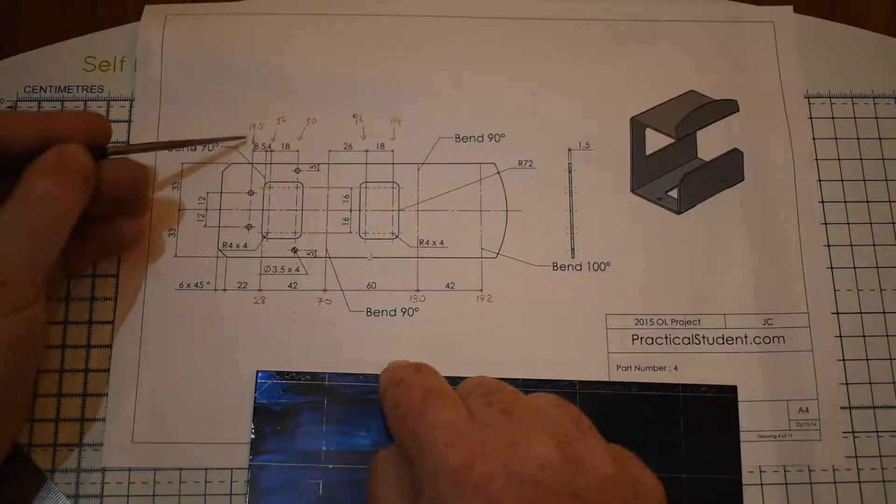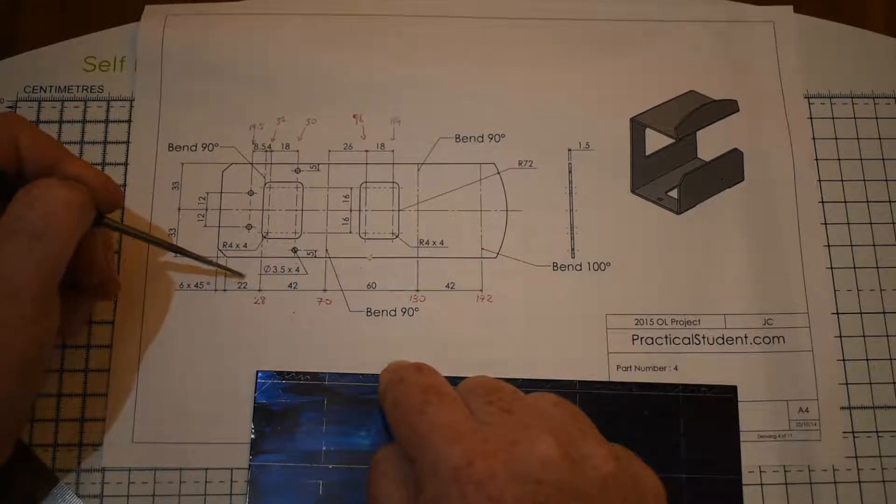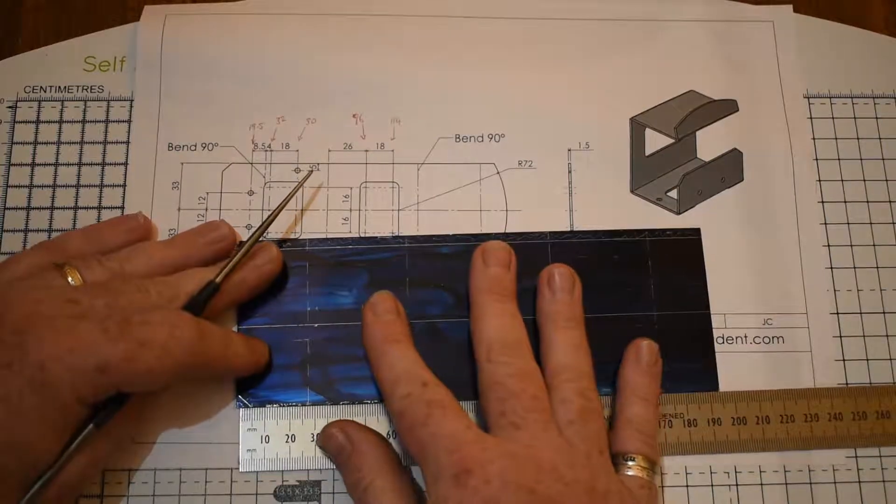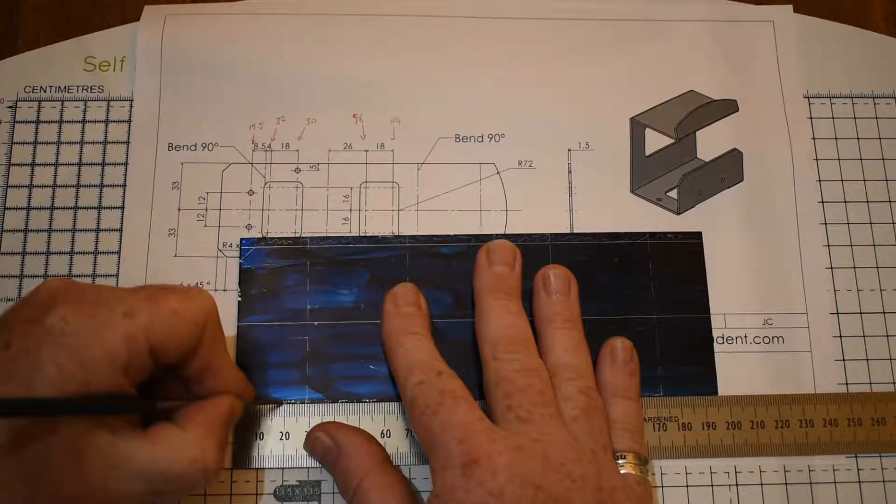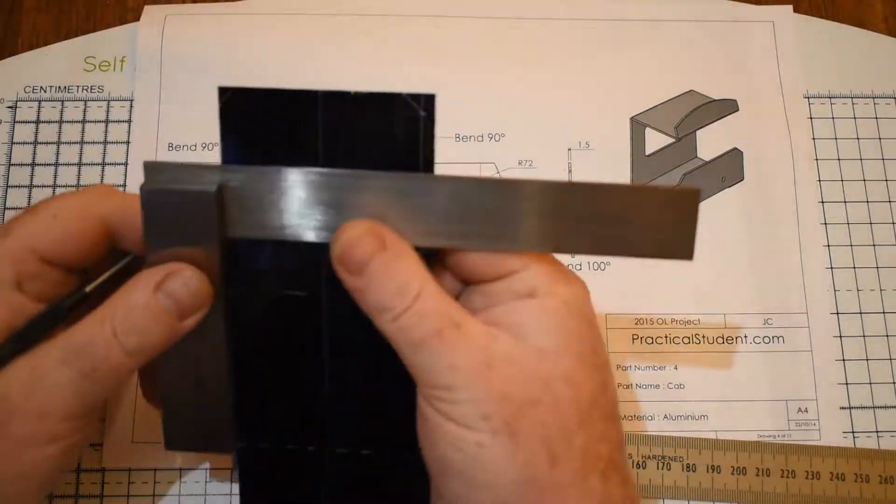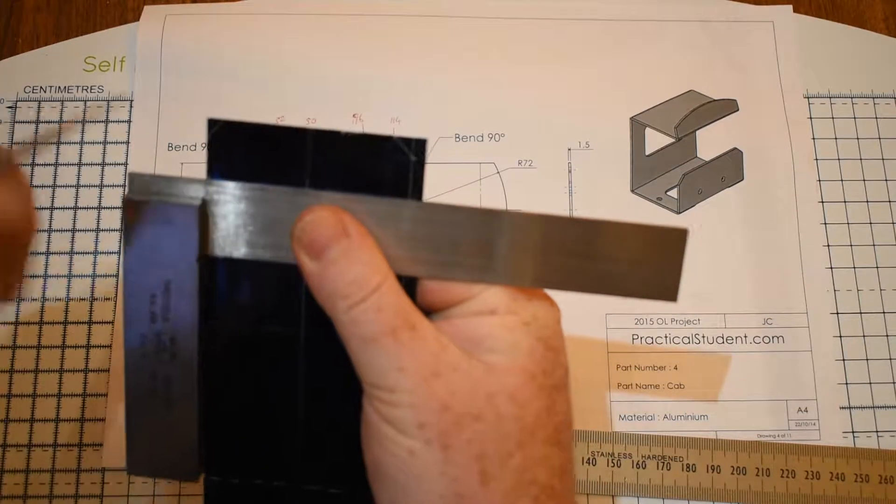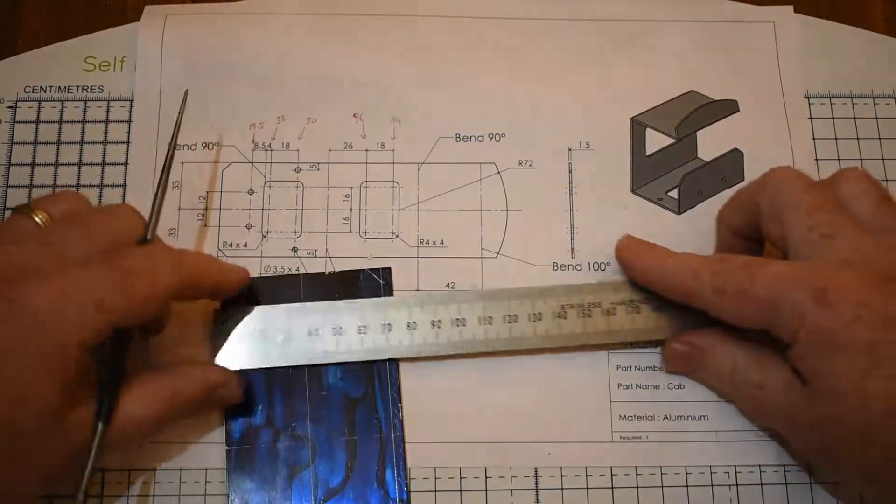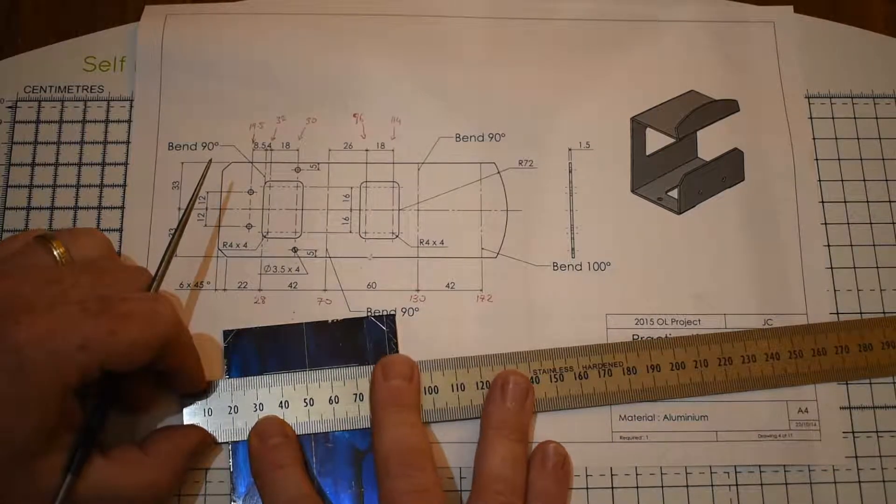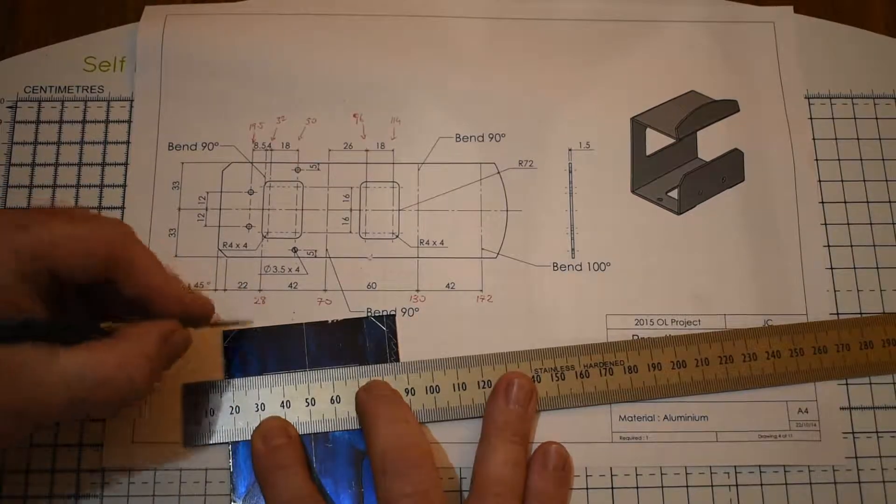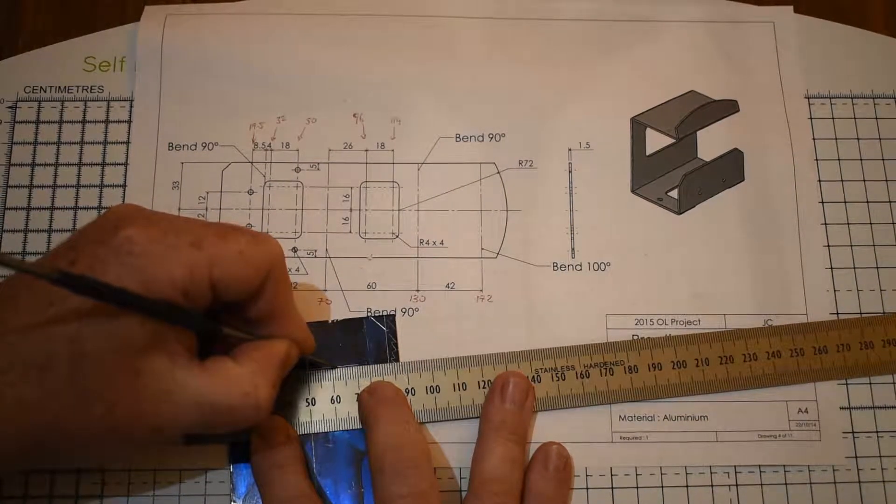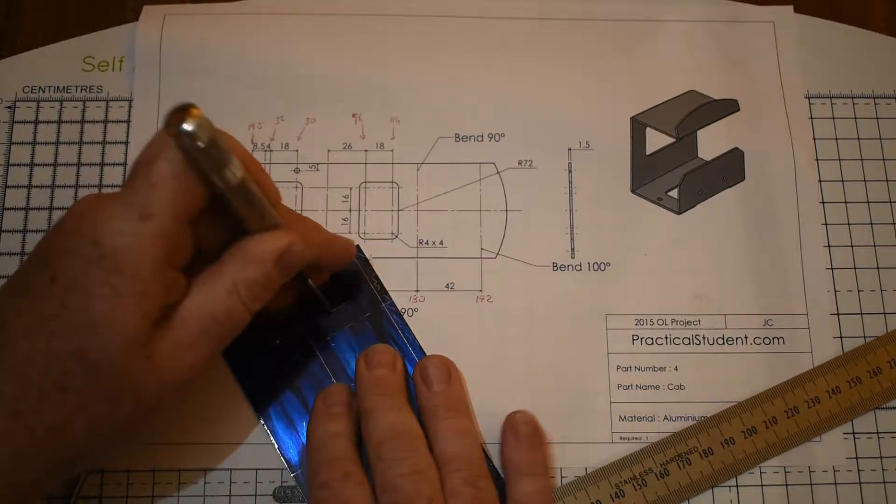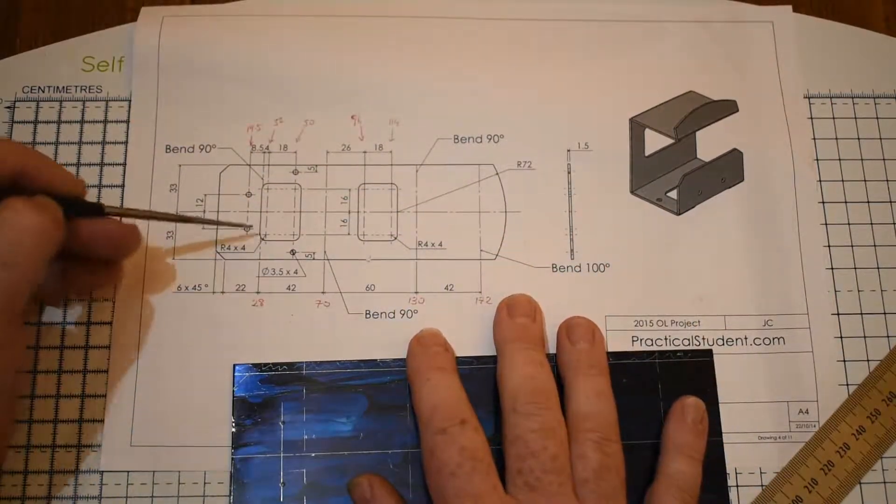We have two holes here and they're at 19.5. I got that by adding 6 to 22 which gave me this line here and subtracting 8.5. So 19.5 from the left edge. T-square line up. And we're told here it's 12 either side of the centre line. I'm going to centre punch those as we're going to be drilling them later on. Alright, so that's most of this first section done here.